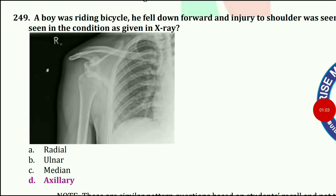When a boy was riding bicycle, he fell forward and injury to shoulder was seen. Which nerve injury is seen in this given X-ray? The answer is axillary nerve injury.